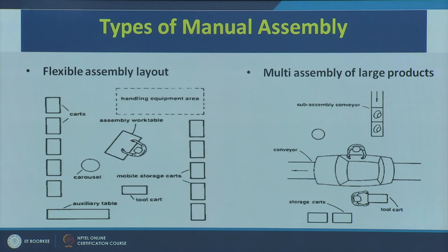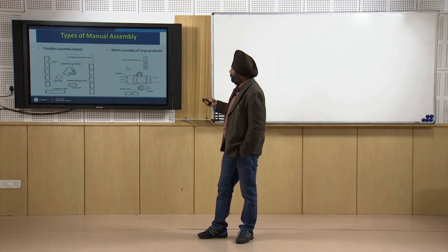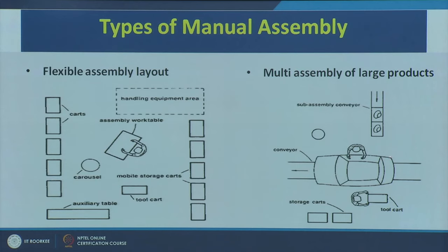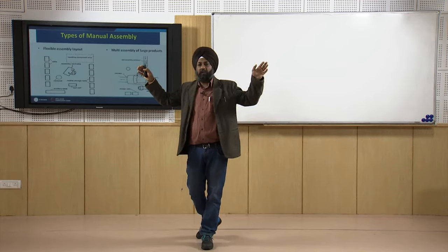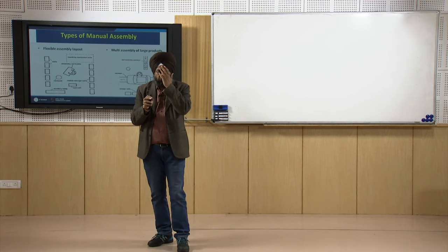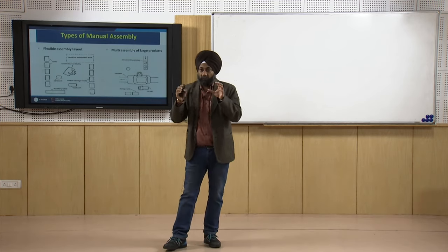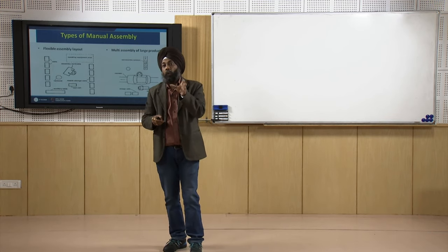The fourth type is the flexible assembly layout, featuring a carousel, tool cart, assembly work table, handling equipment area, and mobile storage carts that can move — reflecting the flexible nature of the layout. The fifth type is multi-assembly for large products, where multiple workers operate simultaneously with tool carts and storage carts, used for very large products requiring several workers at the same time.